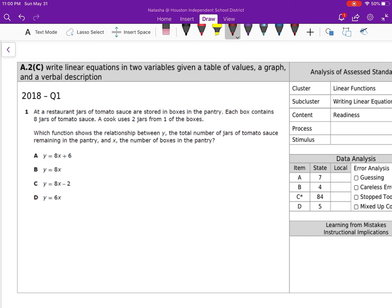At a restaurant, jars of tomato sauce are stored in boxes in the pantry. Each box contains 8 jars of tomato sauce and a cook uses 2 jars from one of the boxes. Which function shows the relationship between y, the total number of jars of tomato sauce remaining in the pantry, and x, the number of boxes in the pantry.